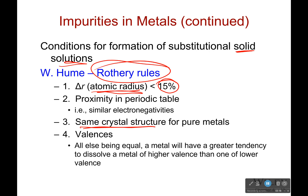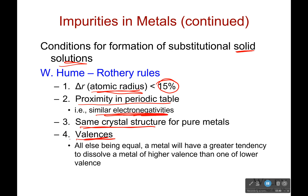These are the Hume-Rothery rules. Third, the elements must have similar electronic activities — we often say they should be in proximity on the periodic table, but electronic activity is what we care about. Fourth, valences must be considered: a metal will have a greater tendency to dissolve a metal of higher valence than one of lower valence. Iron and other metal atoms can get very high in valence.